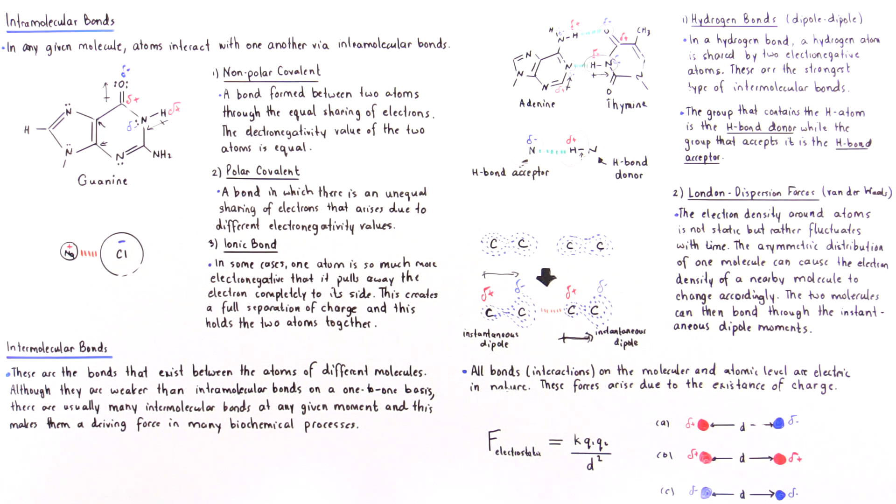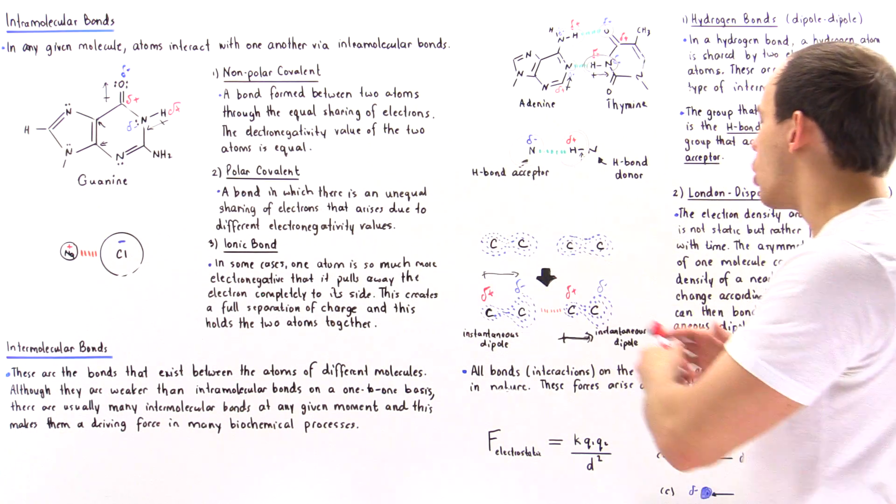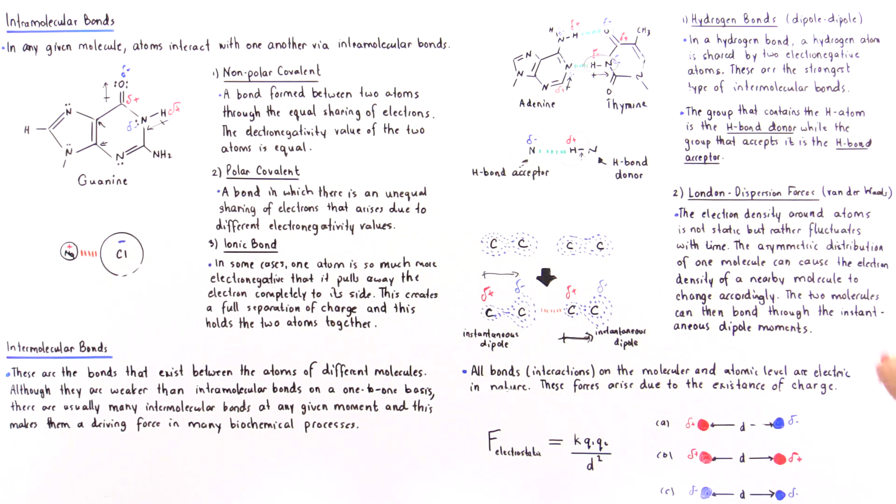London dispersion forces exist because electrons fluctuate over time. The electron density around atoms is not static but rather fluctuates with time.